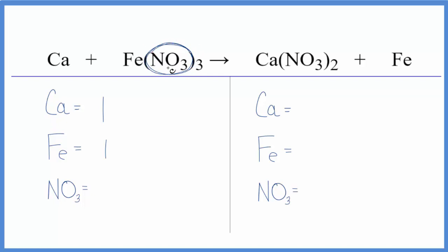We have a nitrate ion here in the reactants, and it stays together in the products. So we're just going to call the nitrate one thing, and that makes the balancing much easier. I have one nitrate times three, so on the reactant side, three nitrates.